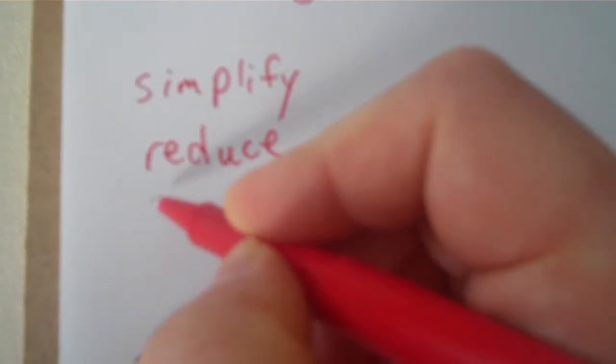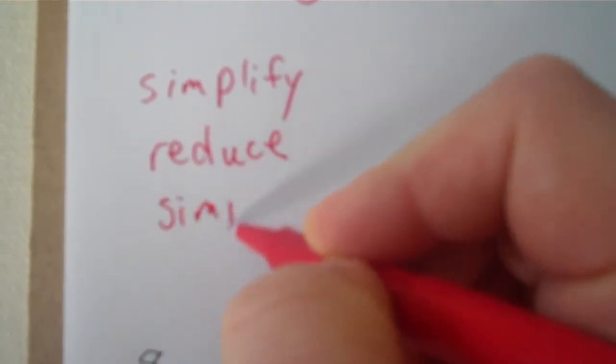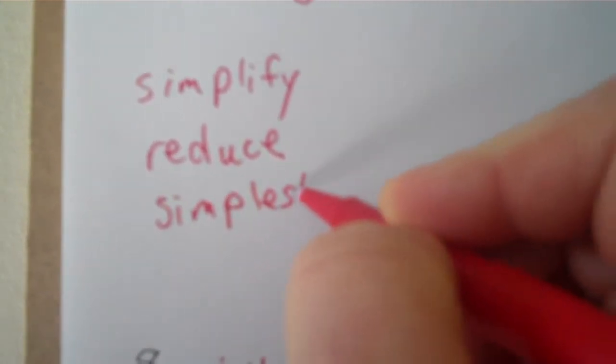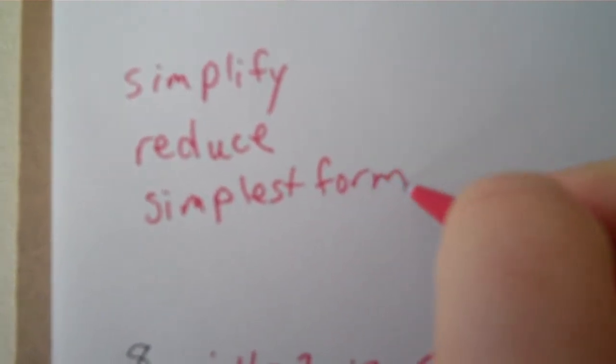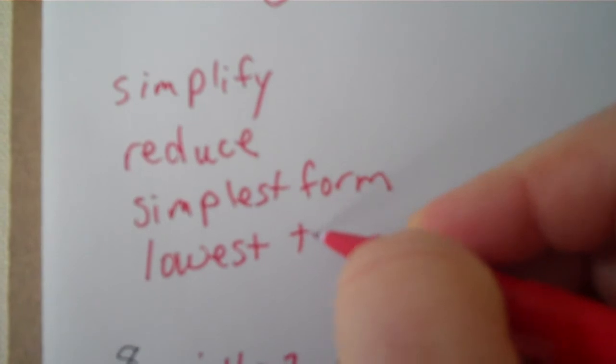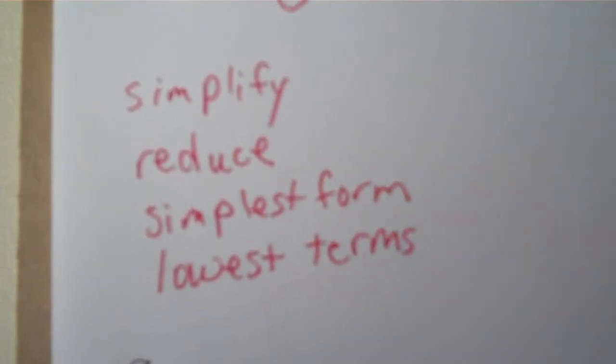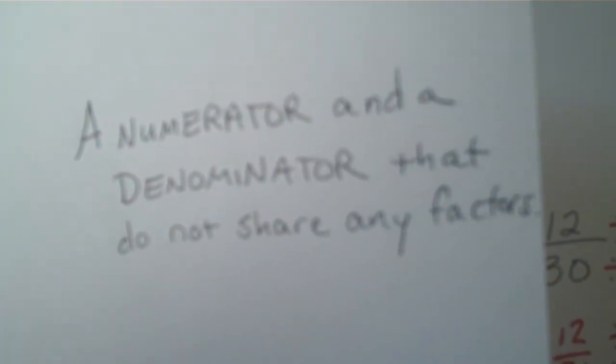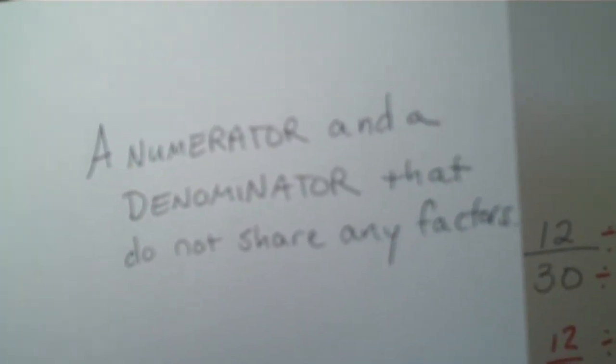So, no matter whether your problem asks you to simplify, reduce, write in simplest form, or write in lowest terms, all they're asking you to do is find a numerator and a denominator that do not share any factors.